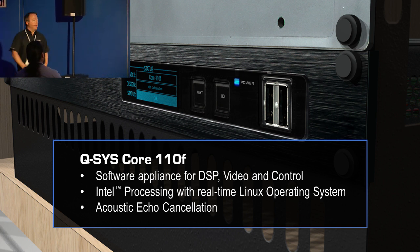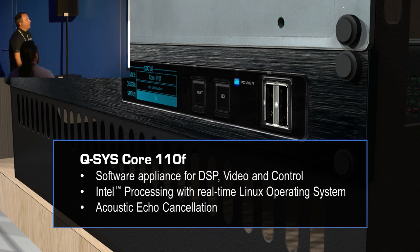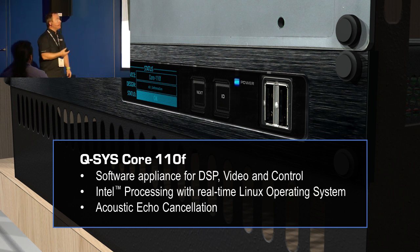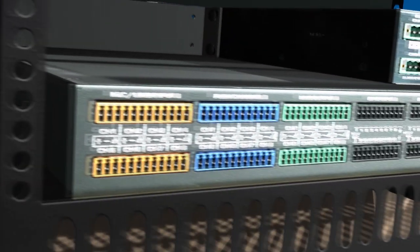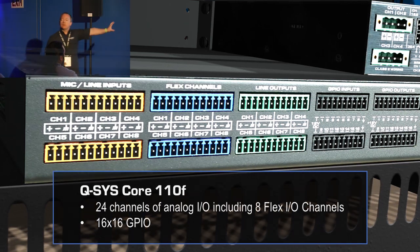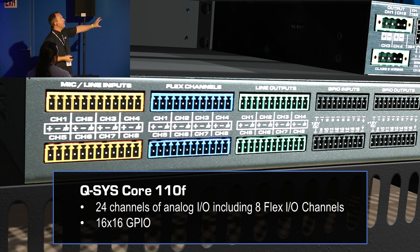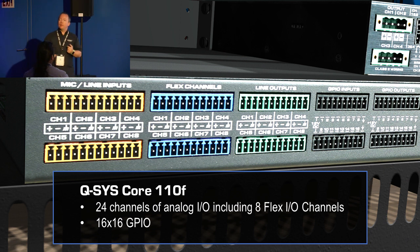Of course we can do acoustic echo cancellation and DSP processing, but we'll talk about all the other things we can do with it. On the back of the box, we have analog I/O — 24 channels in total. Eight of those are fixed mic/line inputs, another eight are fixed line-level outputs. The channels in the middle are what we call flex channels — these are software-configurable as either an input or an output in real time using software.